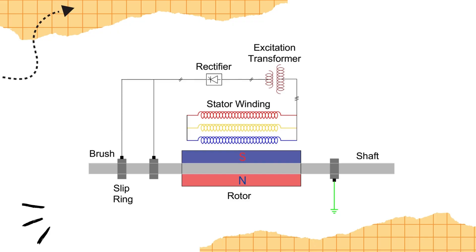The static excitation method involves a step-down transformer, also known as an excitation transformer, connected to the generator output. This output is then rectified to DC and conveyed to the rotor field using a slip ring and brush setup.